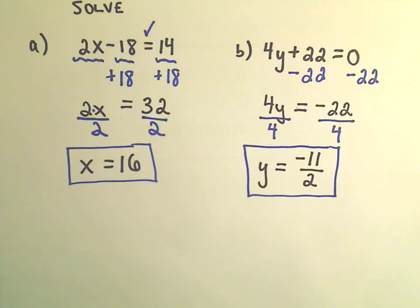You could turn it into a mixed number, negative 5 and 1 half. But typically, I think in most classes, if you just leave it as a reduced fraction, that will be what people want to see.